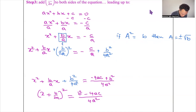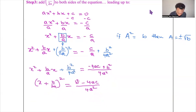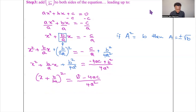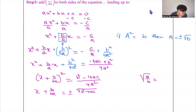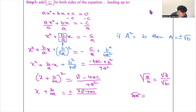Applying the square root property, we take the square root of both sides: x + b/2a = ±√(b² − 4ac) / √(4a²). Remember that √(a/b) = √a / √b. The square root of 4a² is 2a, so the right side becomes ±√(b² − 4ac) / 2a.